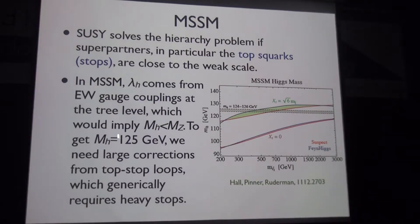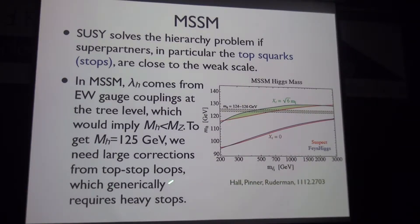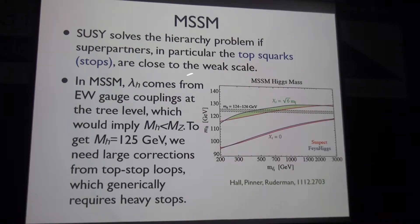To raise the Higgs boson mass from below the Z mass to 125 GeV, one needs large radiative corrections from top and stop loops. This requires a very large contribution, typically implying very heavy stops unless there is large left-right mixing from the A-term. This is in tension with the naturalness requirement, at least within the MSSM.